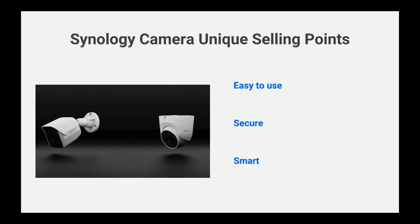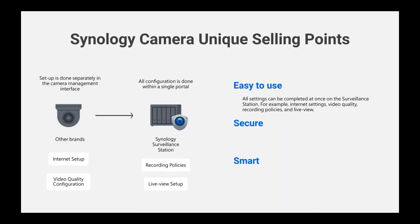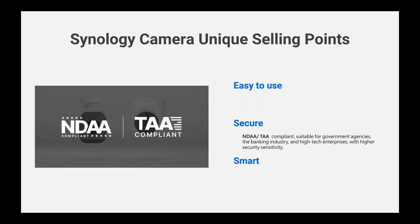Easy to use, secure, and smart. Synology Cameras can be quickly detected in Surveillance Station upon power-up, and all settings can be managed on a single portal. For example, in brighter areas, camera settings need to be adjusted to accommodate brightness and exposure so that clear footage is recorded. Another example is recording rules — to save internet bandwidth, users may need to configure event recording instead of continuous recording. Without Synology Cameras, users would need to access each camera's back end to adjust settings and confirm them again on the server portal. If multiple brands of cameras are used, there will be different camera UIs, resulting in a complex and time-consuming procedure.